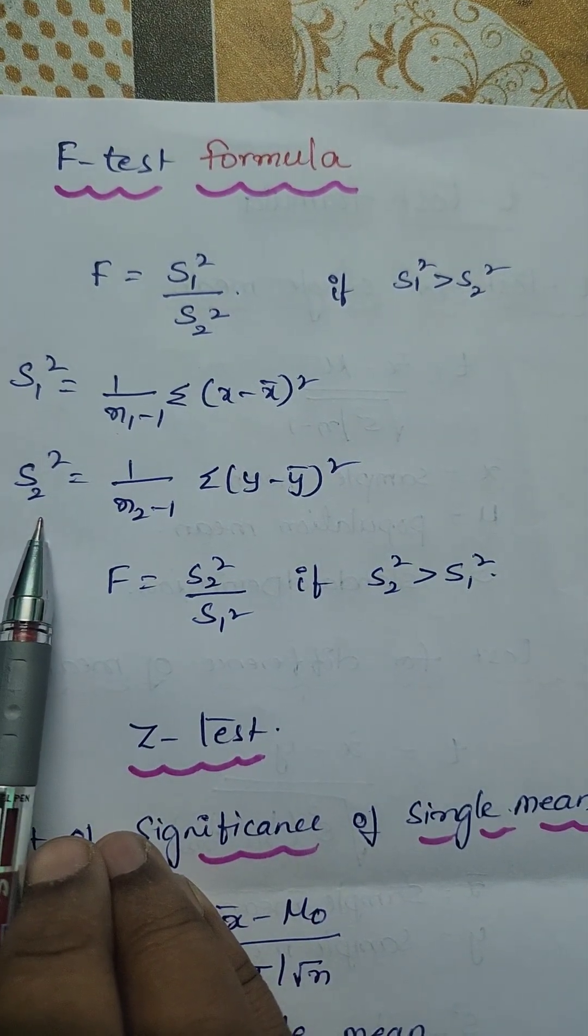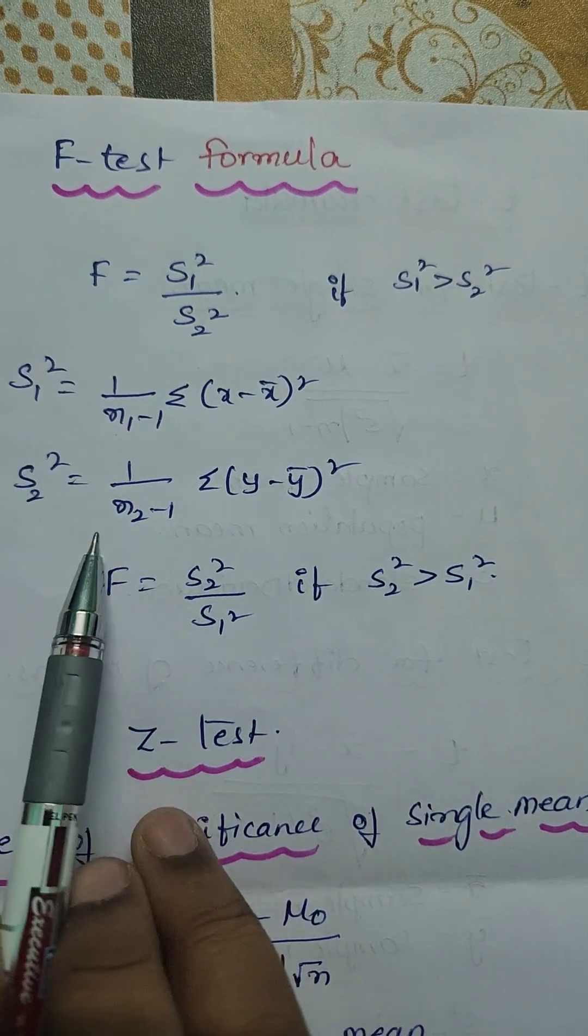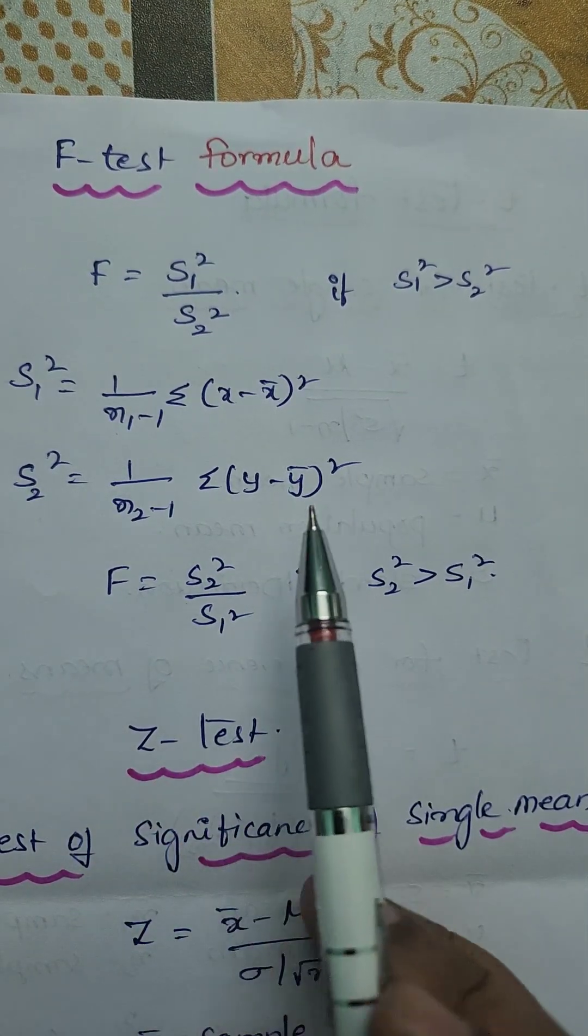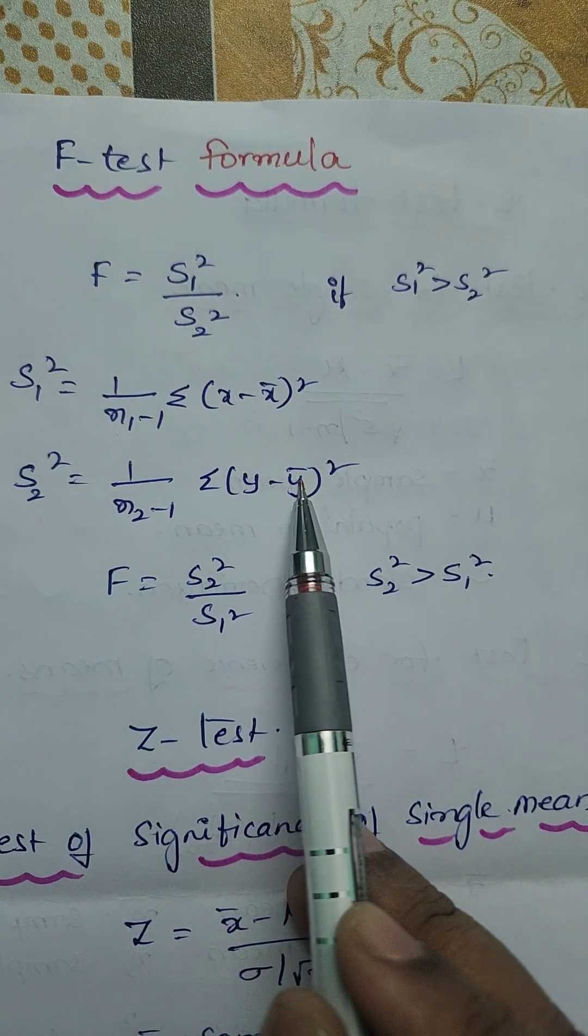And here S2 square is 1 by N2 minus 1 summation y minus y bar whole square. Here y bar is mean of y.